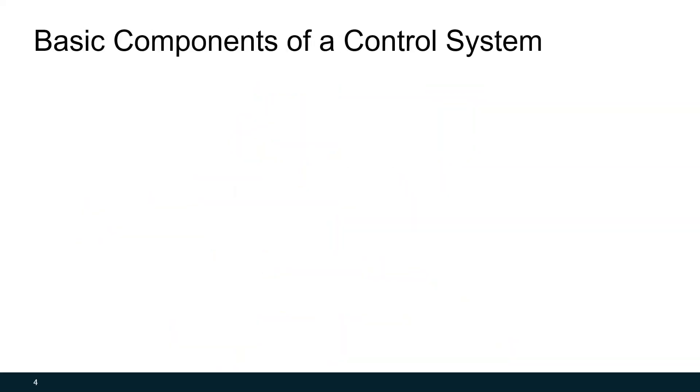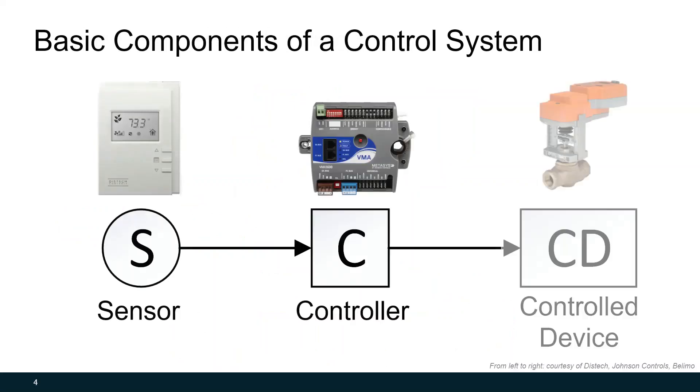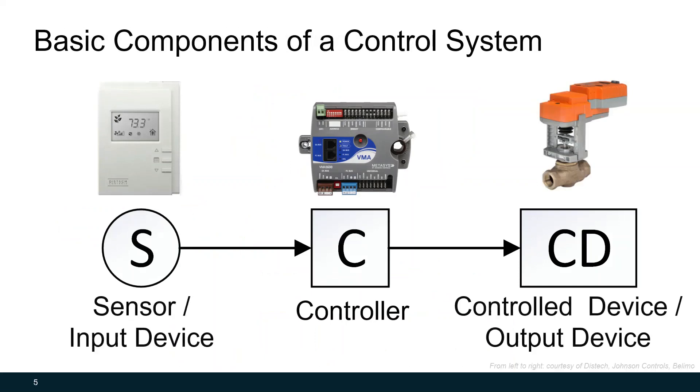Like I stated before, the basic components of a control system are the sensor, the controller, and the control device. The sensor is sometimes called the input device and the control device is sometimes called the output device. This is because the sensor sends an input signal into the controller and the controller sends an output signal to the control device. The terminology around the signals input and output can be confusing. Just remember that the signal is labeled in its relation to the controller. Inputs go into the controller and outputs go out of the controller.